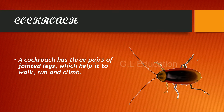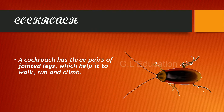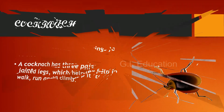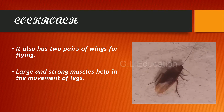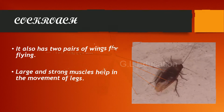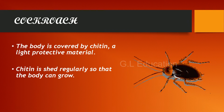Cockroach. It has three pairs of jointed legs which help it to walk, run and climb. It also has two pairs of wings for flying. Large and strong muscles help in the movement of legs. The body is covered by chitin, a light protective material. Chitin is shed regularly so that the body can grow.